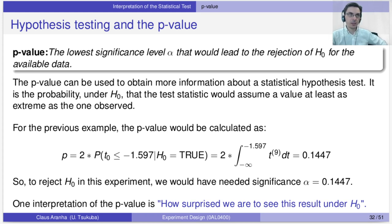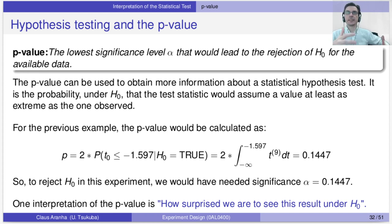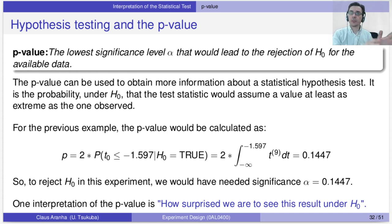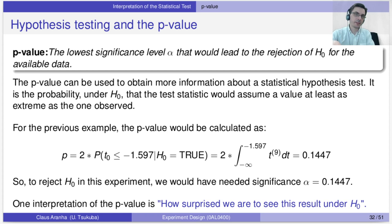More generally, the p-value is the probability under the null hypothesis that the test statistic would assume a value as extreme as the one observed in the sample. In other words, it's how surprising the sample is under the null hypothesis. A high p-value indicates the observed data is not very surprising under the null hypothesis — it's expected. A low p-value means the observed value is very surprising, suggesting the null hypothesis should perhaps be rejected.